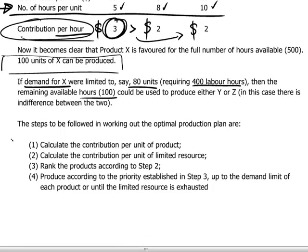Here's a summary of the steps to be followed when working out what the optimal production plan has to be, based on a restrictive condition represented by a scarce resource — in other words, a bottleneck in the production process.